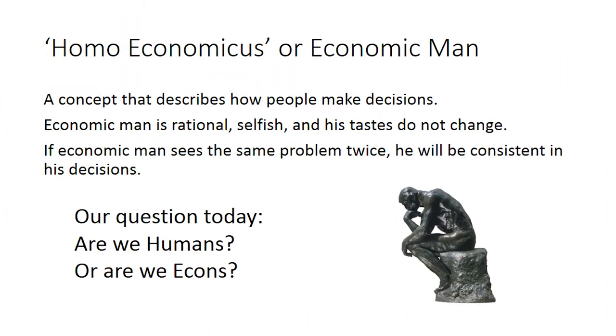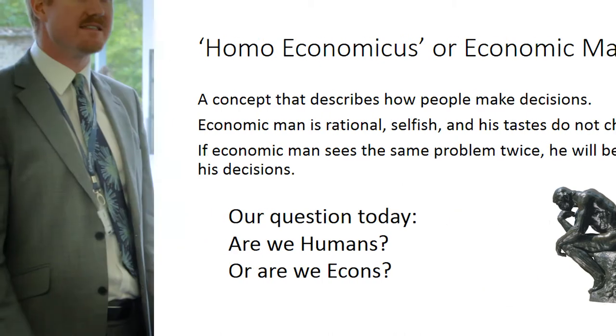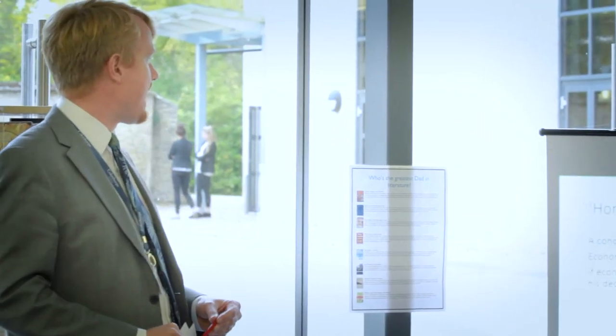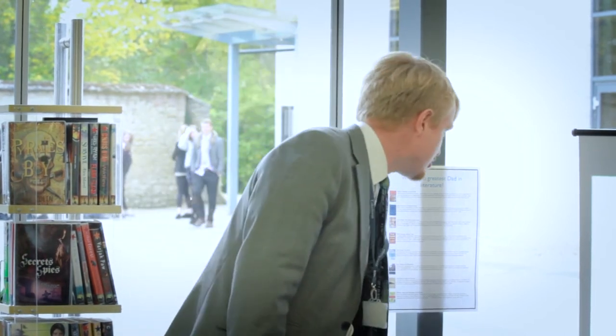One of the first things we learn in A-level economics is that we introduce ourselves to homo economicus, or economic man. We get into the idea that human beings are rational, self-interested, and they think everything through when making a choice — like, do I have early lunch so I can make the spark lecture? And everybody always does this; it's the principle assumption of economics. Economic man, if he sees the same problem twice, will be consistent in his decisions. That's been the base of economics since it was invented by Adam Smith in the 1770s. Our question today is: are we humans, or are we economic man? To what extent are we actually as rational as we think?